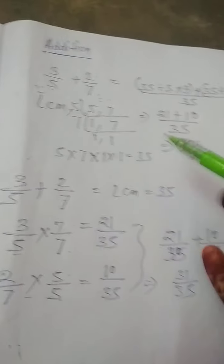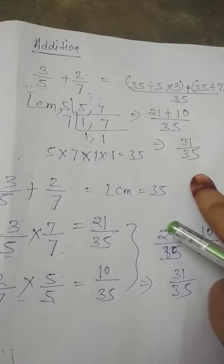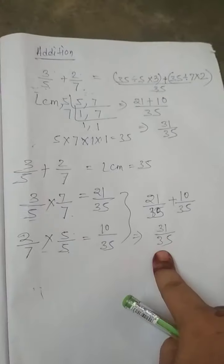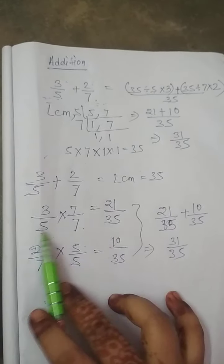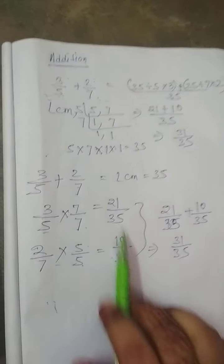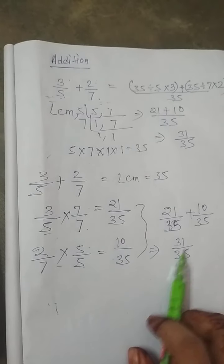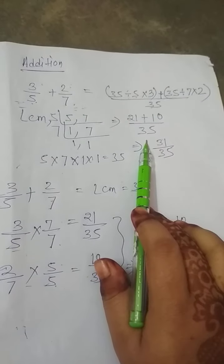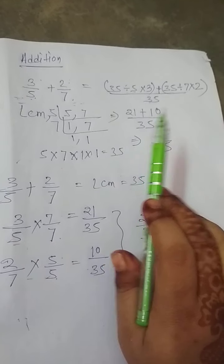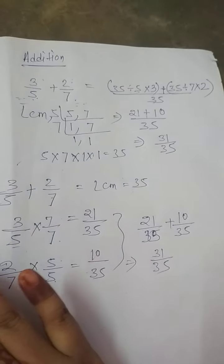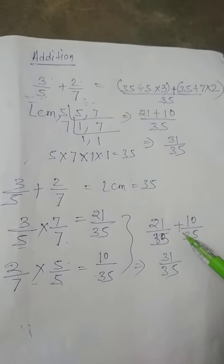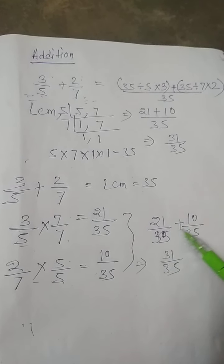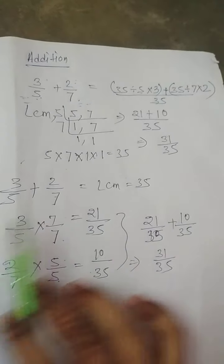Got it? This is one process — both are correct and the answer is the same. Which process is easy for you, you do that. Here, first you have to take the LCM, then you have to equal the denominator, then you have to add it. Addition and subtraction are definitely the same — just put the subtraction symbol in place of the addition symbol.